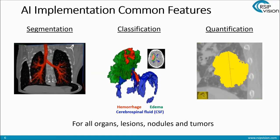Quantification basically means that we put a number on whatever it is that you want to measure. In this case, for instance, you can see this is a tumor — we have segmented it, we've classified it as a tumor, and now we measured it to find the length, which is something required by the RECIST score that we'll speak about in a second. But it can be the length, it could be the volume, it could be the density. Whatever you need to count could be counted.